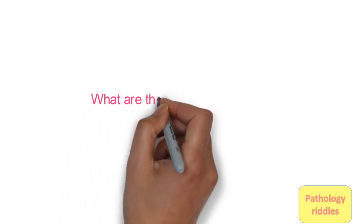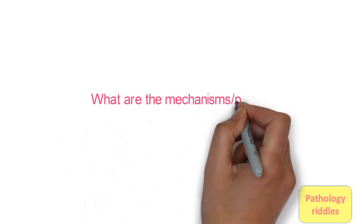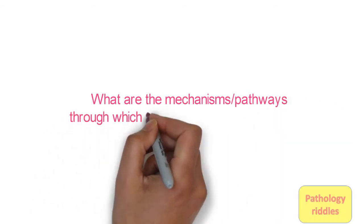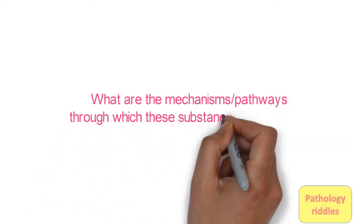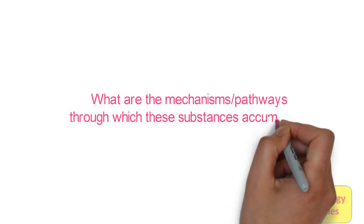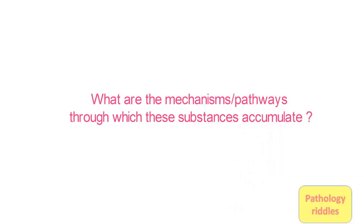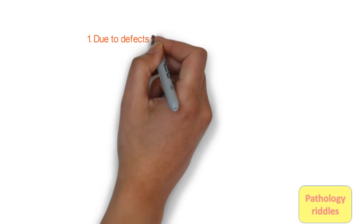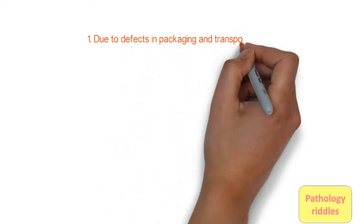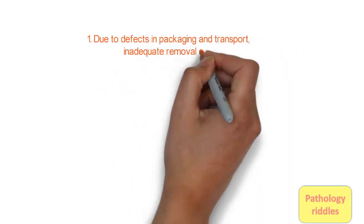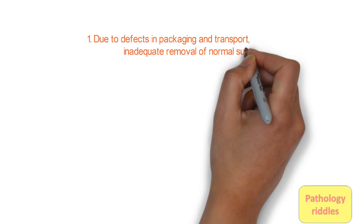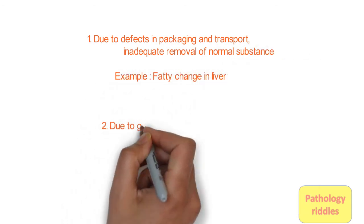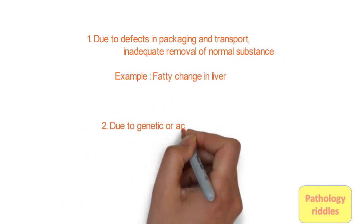Third question: What are the mechanisms or pathways through which these substances accumulate? The first mechanism is due to a defect in packaging and transport — there is inadequate removal of normal substances, hence they accumulate within the cell. For example, fatty change in liver.